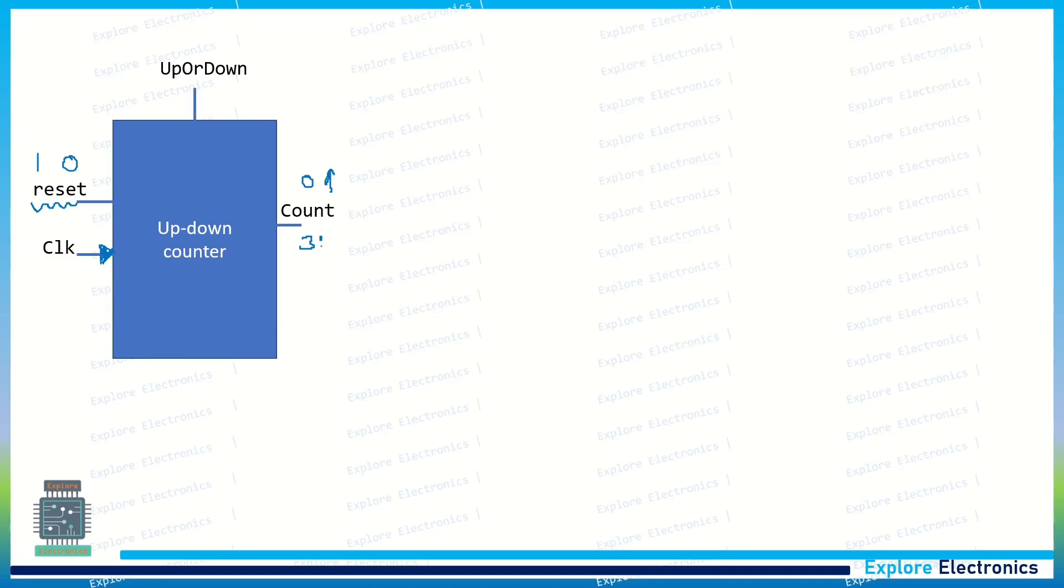I am designing, so I need to declare this count as 3 down to 0. And we have one more control signal, that is up or down. When up or down is equal to 1, it will operate as an up counter, and when up or down is equal to 0, this counter will operate as a down counter.